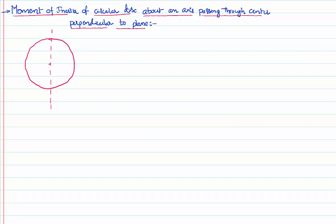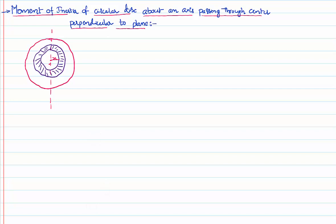Let us consider a thin strip within the circular disk. This is the strip's inner surface and this is the strip's outer surface. The disk is a combination of so many strips like this. I will find the moment of inertia of one strip and integrate, therefore I will get the total moment of inertia. Let me assume this strip is at a distance of x from the axis of rotation. The strip is definitely having some thickness — let its thickness be dx. That means its inner surface is at distance x and outer surface is at distance x plus dx, whereas the radius of the disk is equal to R.